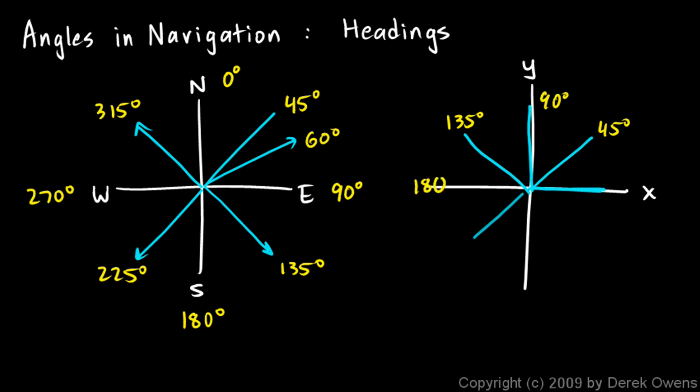And then in this direction here would be 225 degrees. Straight down in the negative y direction would be 270, and then in the fourth quadrant there, right in the middle of the fourth quadrant, that would be 315 degrees. And then 360 would be the same as 0.